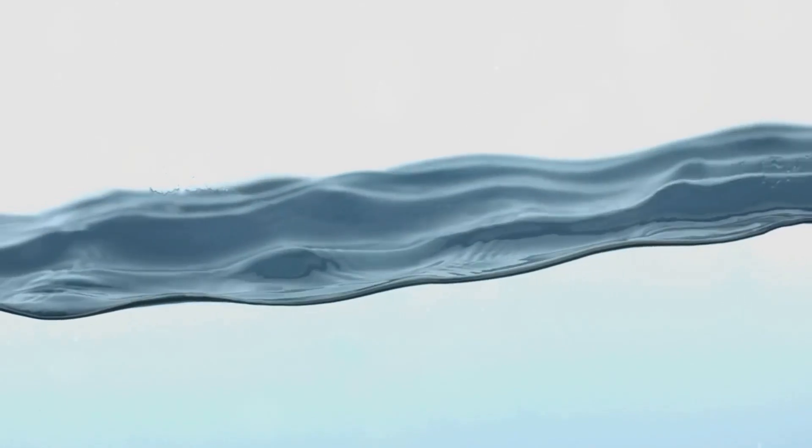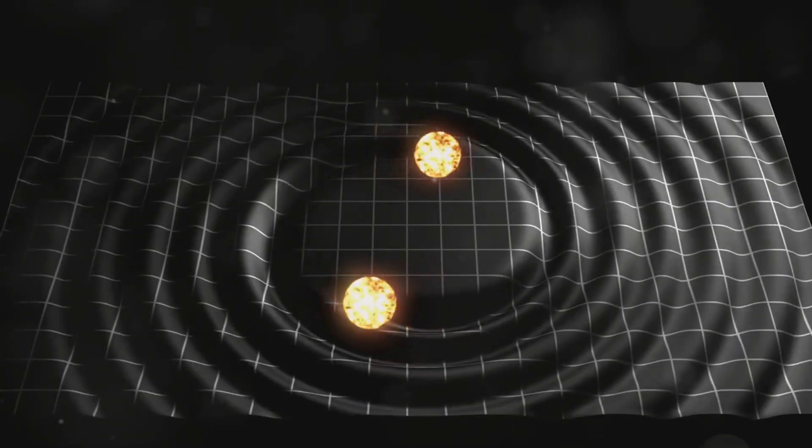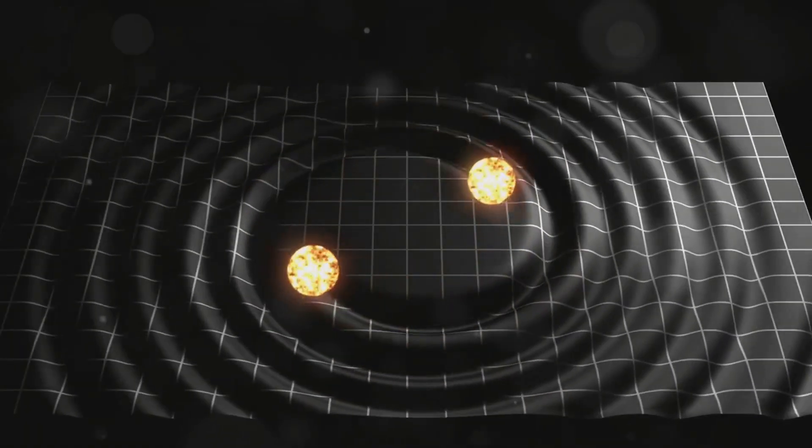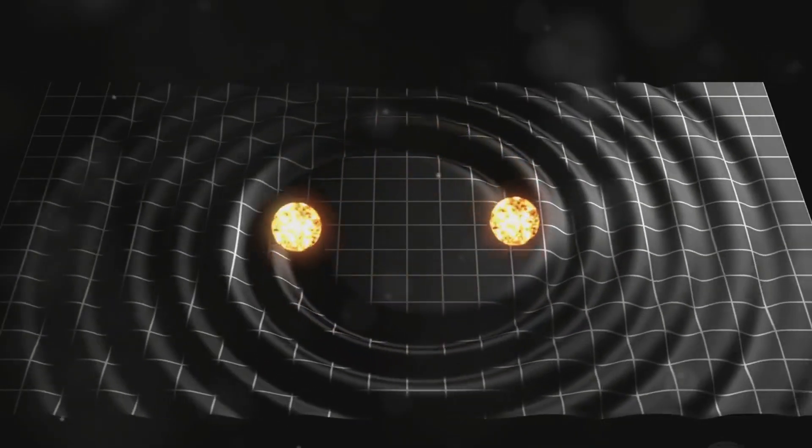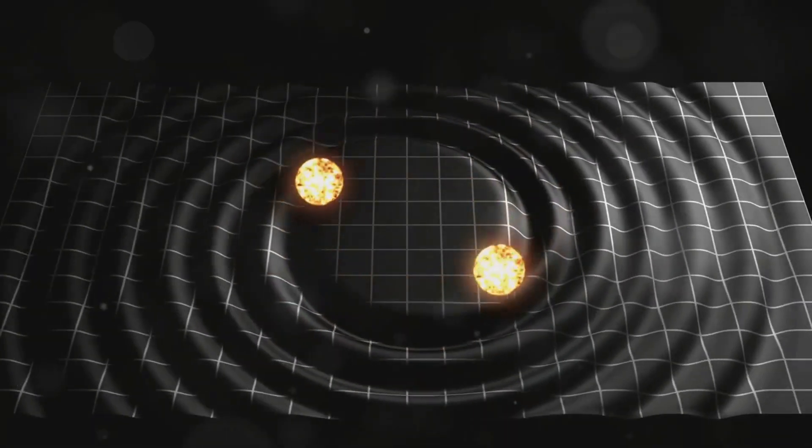Imagine stretching a rubber sheet taut. Now flick it with your finger. The sheet vibrates sending out waves that travel across its surface. Gravitational waves are analogous to these ripples, but instead of a rubber sheet, they distort the very fabric of space-time.